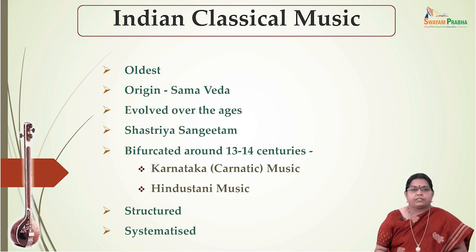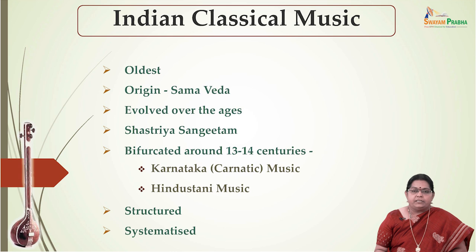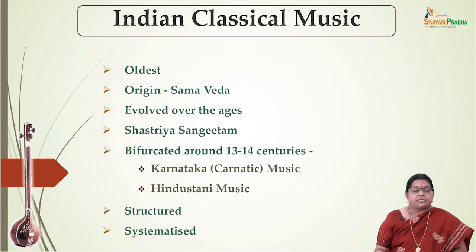Indian classical music is basically classified into two systems: Carnatic music, prevalent in the southern states of India, and Hindustani music, prevalent in the northern states of India. This bifurcation of Hindustani and Carnatic came into existence around the 13th–14th centuries. Since classical music is structured in a scientific manner,